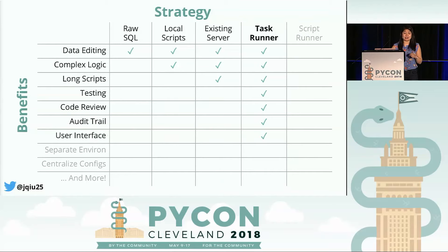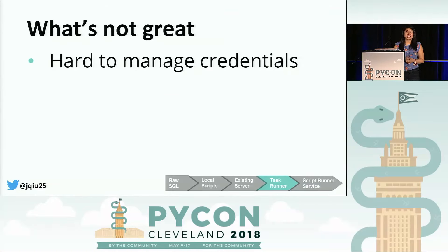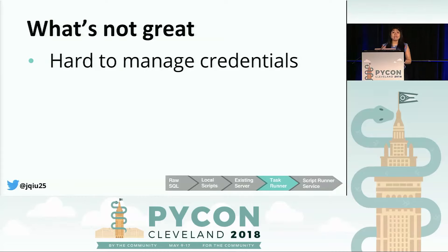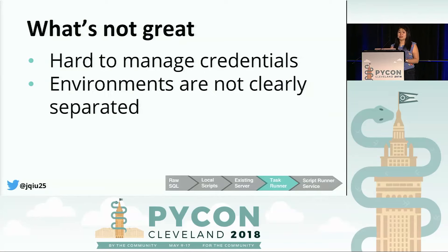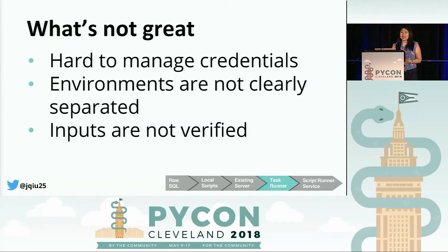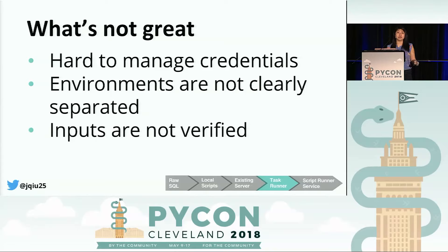There are still some reasons the task runner isn't exactly what we want. It's kind of hard to input command line arguments every single time you want to run a script, and this is particularly true if your script requires a lot of credentials. One engineer was still running long scripts by copying them to an existing server because his script had over 30 credentials — it was just easier to put them in a file and pipe them in. There's also no clear separation of environment, and no system to verify that the arguments being passed into the script are the correct ones.